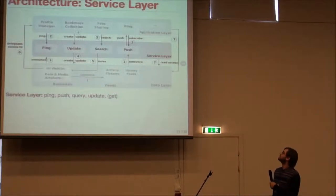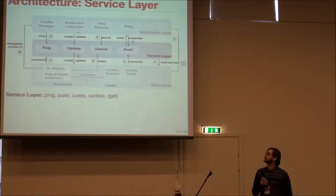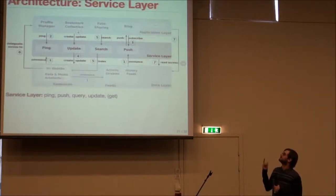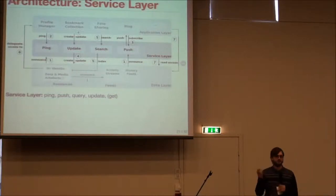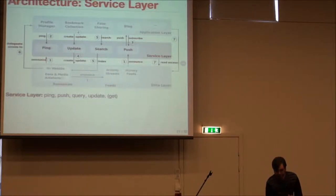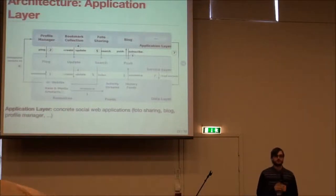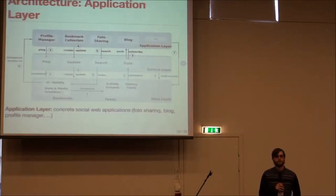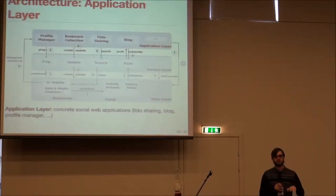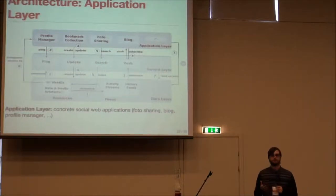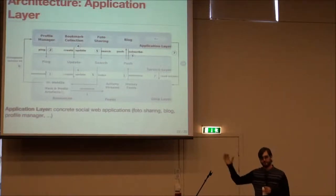The third layer is the service layer, and all the basically traditional web services like push, get, updates — whatever you can imagine — are here. They serve as a method to gather, push, and cache the data. The last layer is the application layer, where all the applications — be it a blog, a photo uploader, or a mobile client — reside. Anything built upon this architecture is an application layer component and it works completely discretely from everything else, so it is not required for the functioning of the whole system.